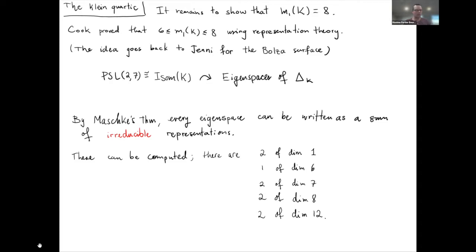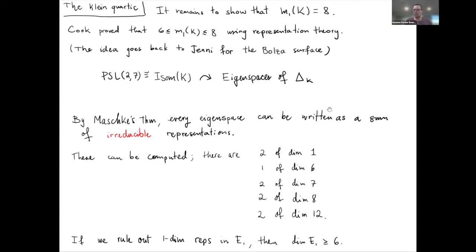By basic representation theory, every representation splits as a direct sum of irreducible representations. Given an explicit presentation of the group, there are algorithms to compute the irreducible representations — here over the real numbers, since we care about real-valued eigenfunctions. The possible dimensions of irreducible real representations of the Klein quartic are: two representations of dimension one, and then representations of dimension six, seven, eight, and twelve. The six in Cook's lower bound comes from ruling out the one-dimensional representations, which would force the eigenspace dimension to be at least six.